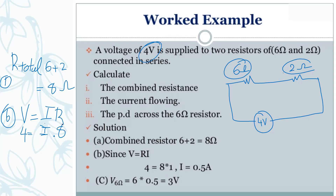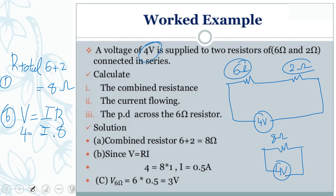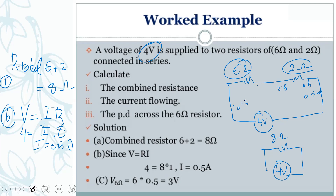To find the current, you must use the combined resistance — that is, the total resistance of eight ohms. So you simplify the circuit: you have eight ohms and four volts. Now you need to find I. Using V equals I times R: I equals V over R, which is four over eight, giving a current of 0.5 ampere. The current at every point in the circuit is 0.5 ampere.